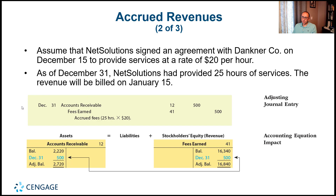On December 31st we make an adjusting entry. Adjusting entries happen on the last day of the period, and they must include one income statement account and one balance sheet account. We debit accounts receivable — an asset — for $500, and we credit fees earned — a revenue account — for $500. This entry is year-end recording, does not involve cash, and the $500 comes from 25 hours at $20 each.